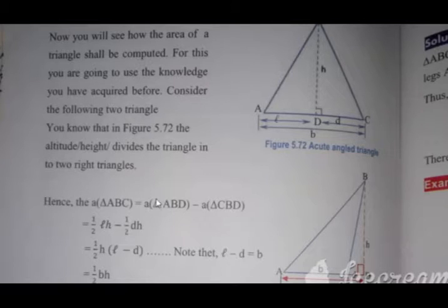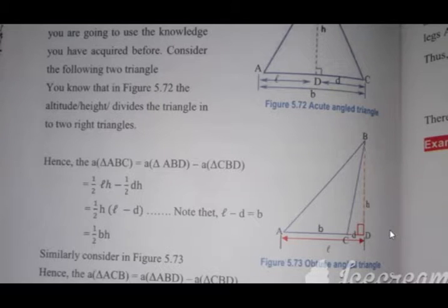The area of triangle ABD is the area of triangle ABD, and the area of triangle CBD. These are the two parts. The area of triangle ABD and the area of triangle CBD.